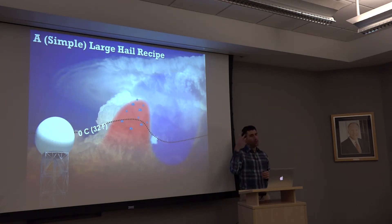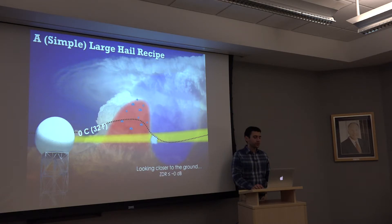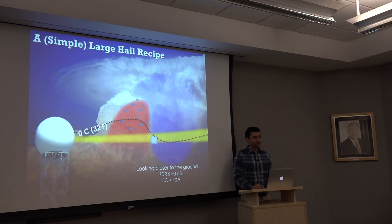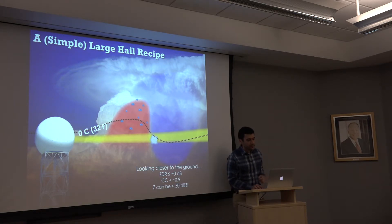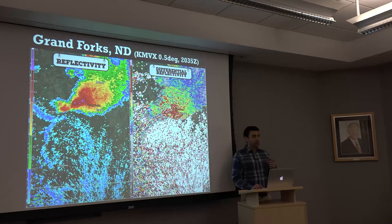Going back to our hail recipe: the hailstone swirls around the updraft, gaining mass. Eventually it gets so big that it can't be advected far downstream and tumbles out of the edge of the updraft where upward motion weakens. Now scanning closer to the ground at the typical 0.5-degree base scan, we similarly expect ZDR around 0 dB — perhaps even slightly negative — and reduced correlation coefficient values of 0.9 or lower. Importantly, reflectivity doesn't have to be that high; it can be less than 50 dBZ.